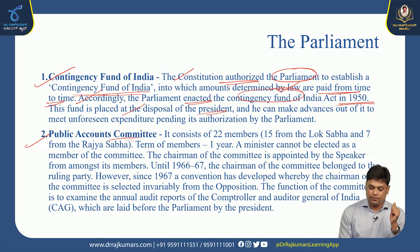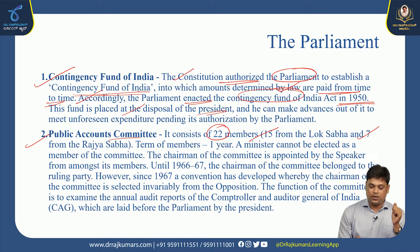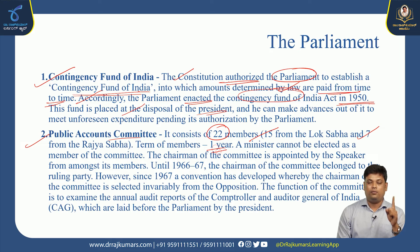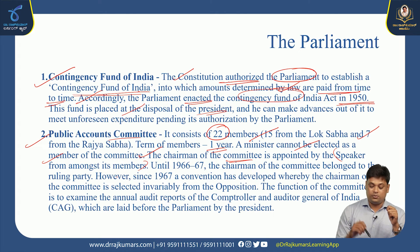The Public Accounts Committee has 22 members — 15 members from Lok Sabha and 7 members from Rajya Sabha. The term of the members is one year. A minister cannot be elected as a member of the committee, and the chairman is appointed by the Speaker from amongst its members.